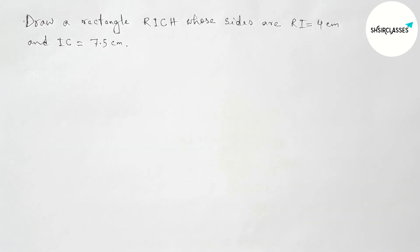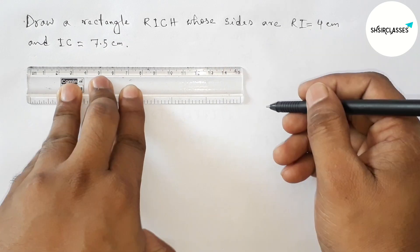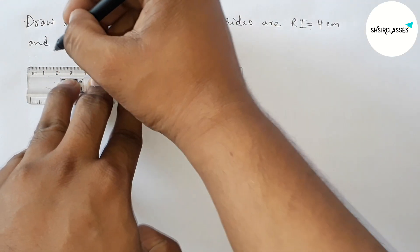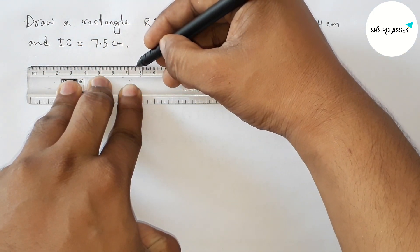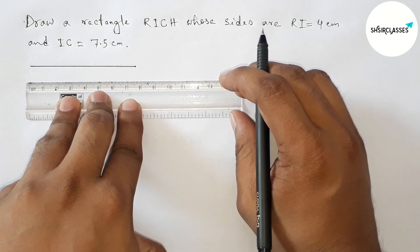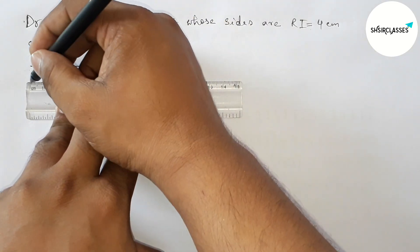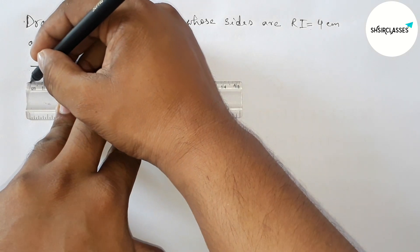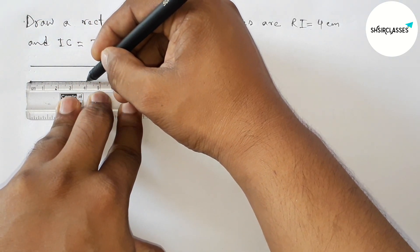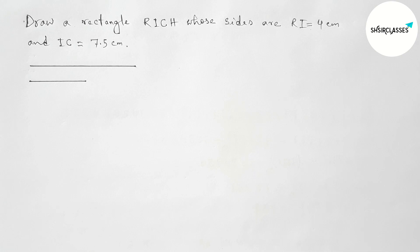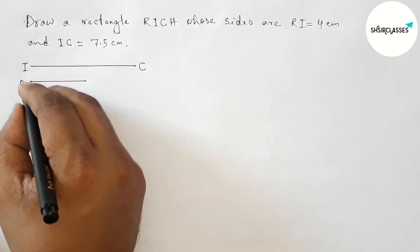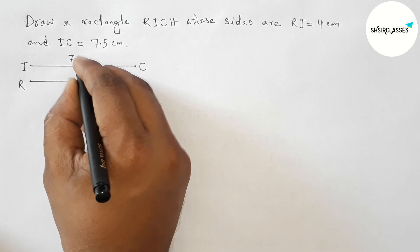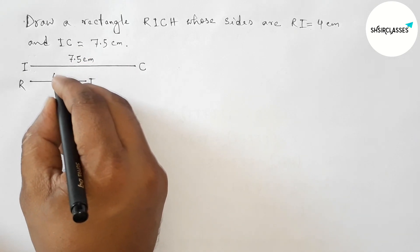First of all, let us draw the given two sides: 7.5 centimeters and 4 centimeters. First, drawing a 7.5 centimeter line segment, then drawing another 4 centimeter line segment. Labeling them: this is IC equal to 7.5 centimeters and this one is RI equal to 4 centimeters.